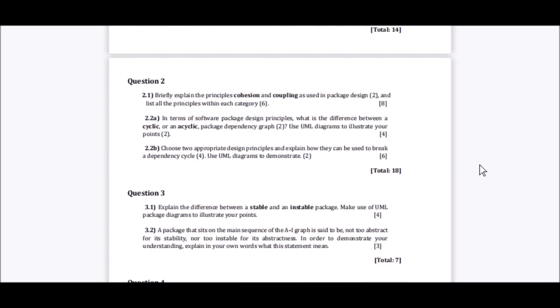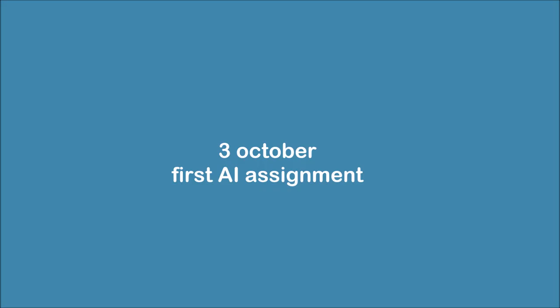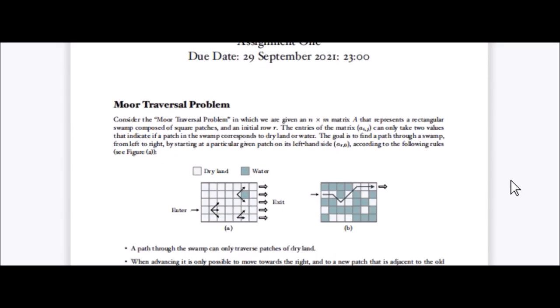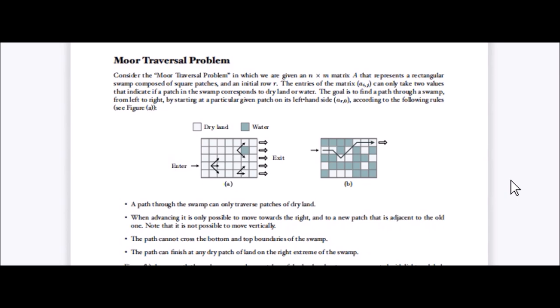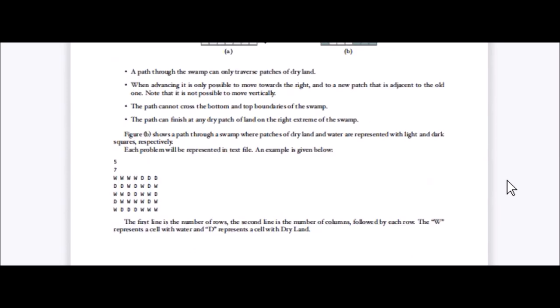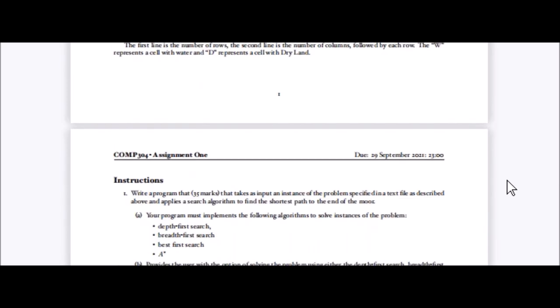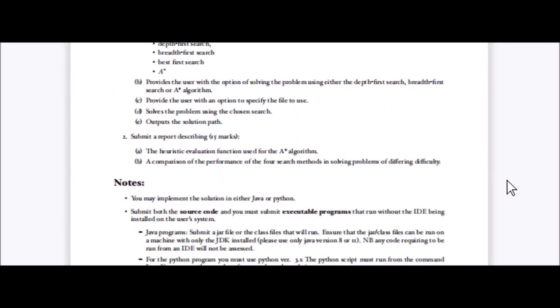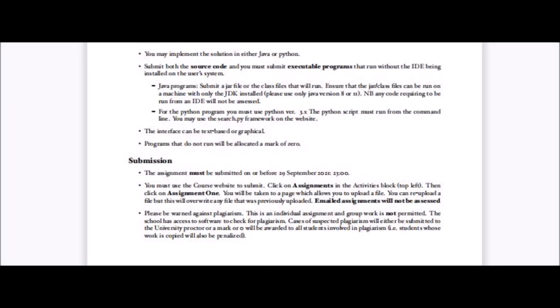By far, COMP 304 had the most difficult assignment in the entire degree, in my opinion. For our first assignment, we had to solve a problem called the Moor traversal problem using the search algorithm that the user enters. We could use either Python or Java to code the problem and then submit an executable file.